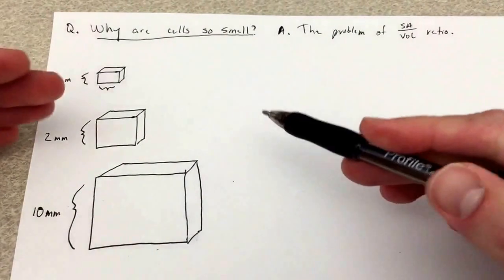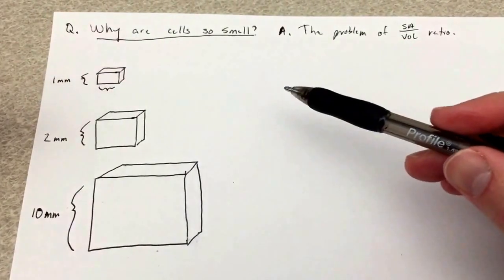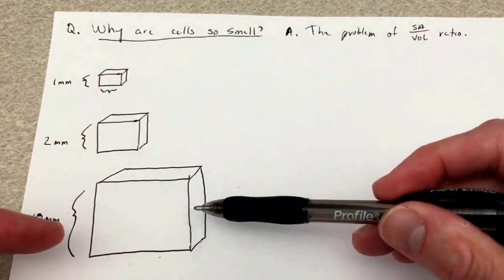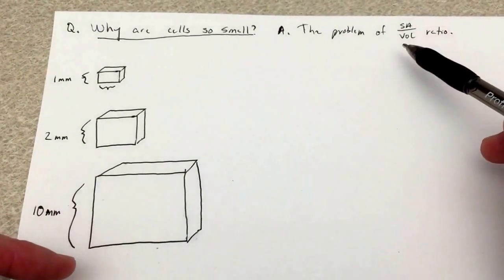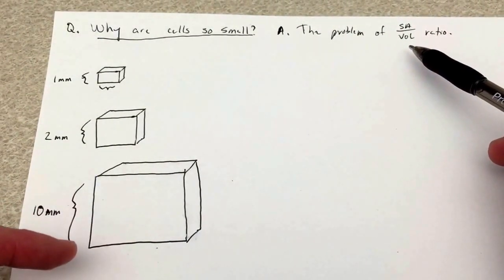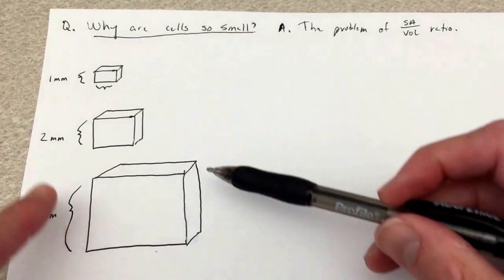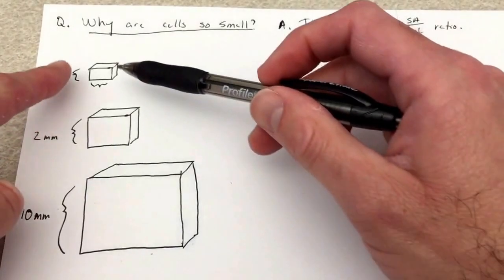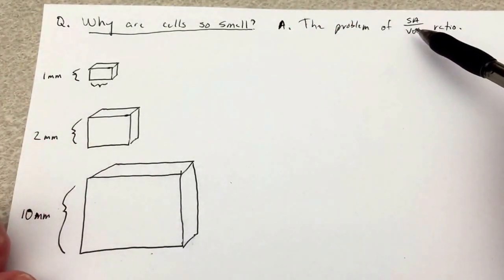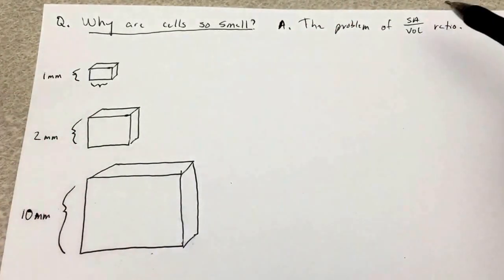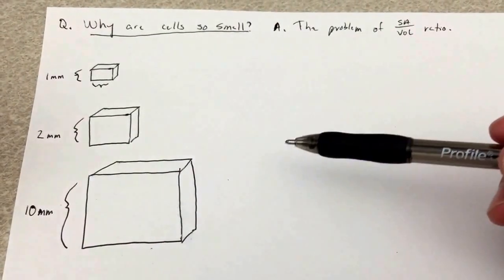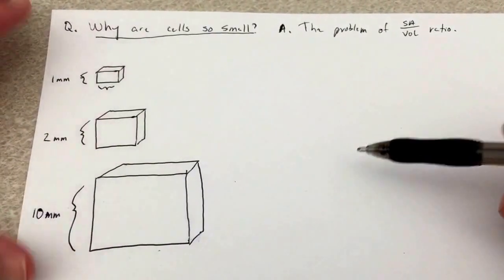The larger cells get, the smaller the surface area to volume ratio. And conversely, the smaller the cells are, the larger the surface area to volume ratio. So we're going to talk about what that means momentarily, but let's take a look at this mathematically first.